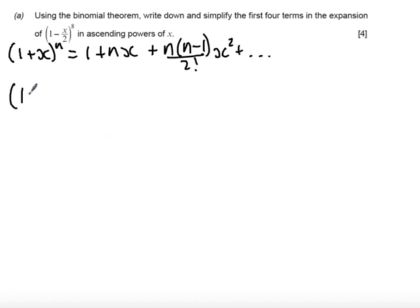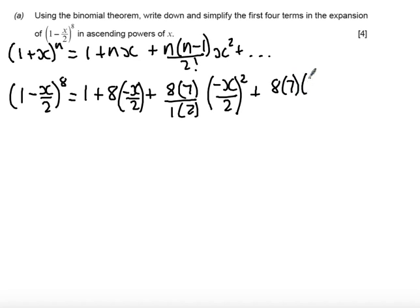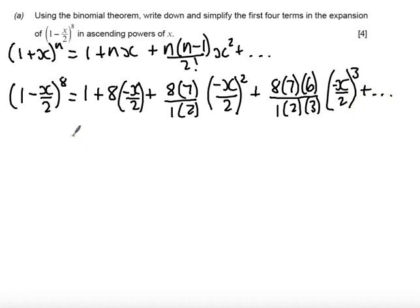With our expansion we have (1 - x/2) to the power of 8, so n is 8 and x is minus x over 2. Remember that the negative is important here. So I get 1 plus 8 times (-x/2), plus 8 times 7 over 2 factorial times (-x/2) squared, plus 8 times 7 times 6 over 3 factorial times (-x/2) cubed, and so on.